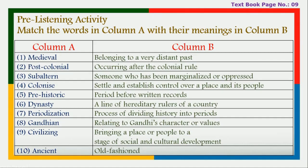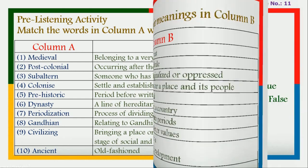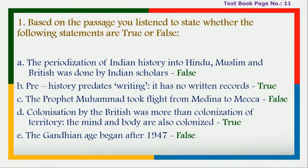Fifth, 'prehistoric' means the period before written records. Sixth, 'dynasty' means a line of hereditary rulers of a country. 'Periodization' means the process of dividing history into periods. 'Gandhian' means relating to Gandhi's character or values. Ninth, 'civilizing' means bringing a place or people to a stage of social and cultural development. Tenth, 'ancient' means old-fashioned.